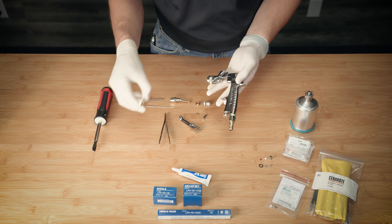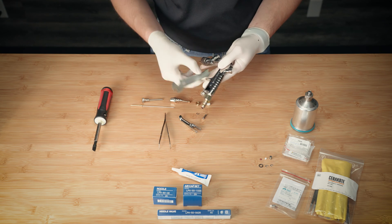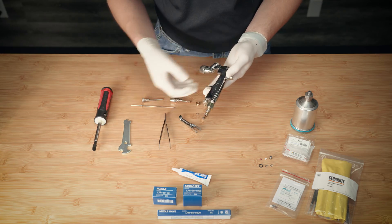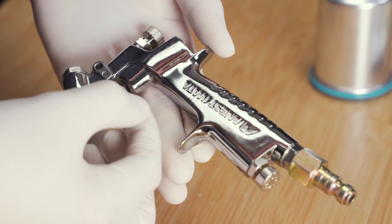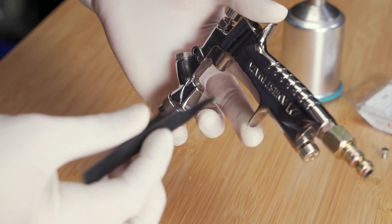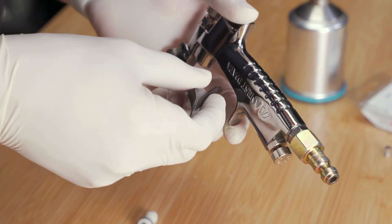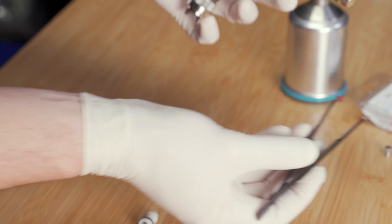Using the small end of the wrench, remove the needle packing seat. With tweezers, carefully remove the old seal and old bushing from inside of the spray gun.